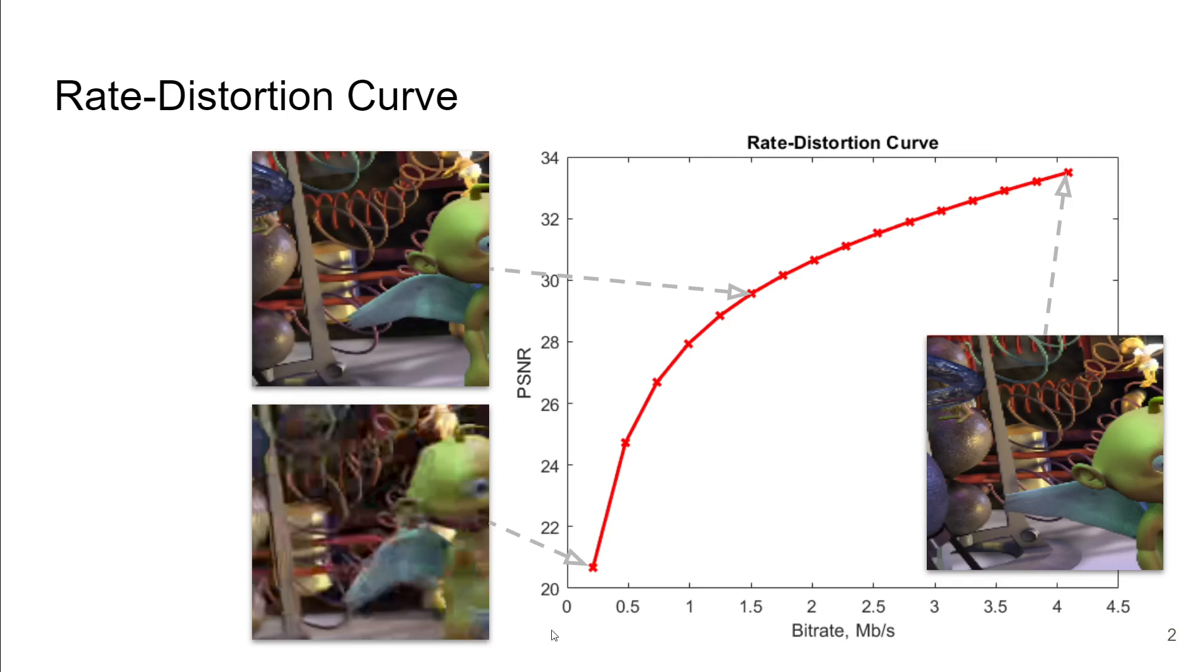In video compression, we can represent the performance of a codec with a rate distortion curve where we have bitrate versus some quality metric, in this example PSNR. We want to be as close to the top left as possible because this represents a video which has low bitrate and high quality.